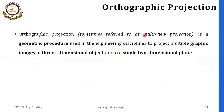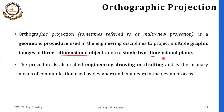Orthographic projection is a geometric procedure that is used in engineering disciplines to project multiple graphic images of three-dimensional objects onto a single two-dimensional plane. So basically, orthographic projection converts three-dimensional objects into a two-dimensional view on a single two-dimensional plane. The procedure is also called engineering drawing or drafting, and it is the primary means of communication used by designers and engineers in the design process.